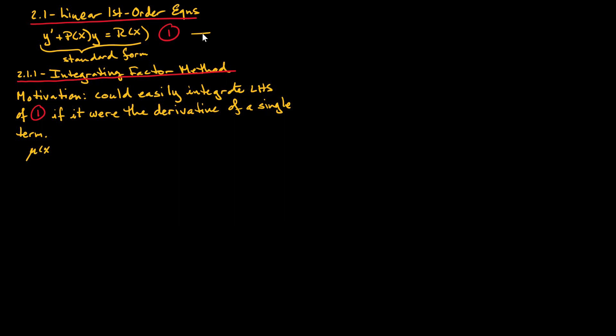So we have mu of x multiplied by y prime, plus mu of x times p of x multiplied by y, is equal to mu of x times r of x. We'll call this equation 2. We just multiplied the left and right-hand sides by a function of x which we call mu of x. What we're looking at is that we want to transform the left-hand side of equation 1 into the derivative of a single term.